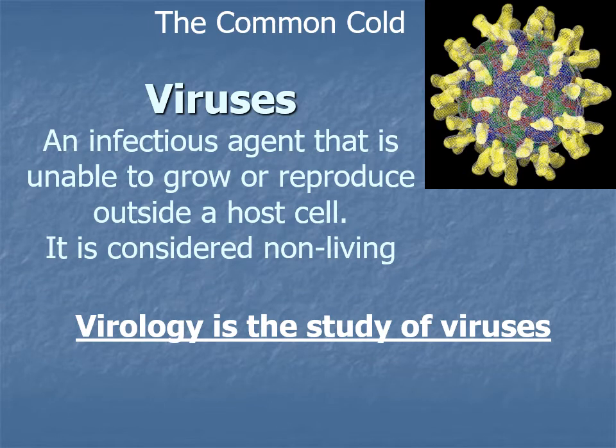Today we're going to start talking about viruses and immunity. A virus is an infectious agent that cannot grow or reproduce outside of a host cell. Because it cannot grow or reproduce without using our cellular machinery, it is considered a non-living entity — not really alive because it cannot perform all the characteristics of life. A virus is not even a cell: it doesn't have a cell membrane, cytoplasm, or organelles.